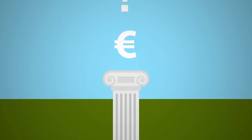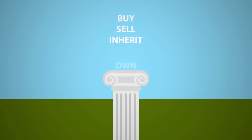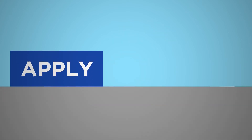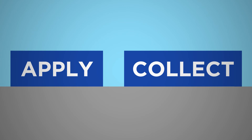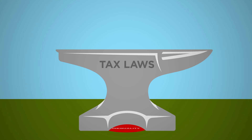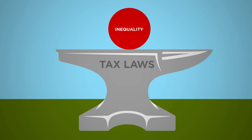So how do governments collect tax? We usually think about tax on income, but if you buy, sell, inherit or own something, or if you're a company and make a profit on something, you likely have a tax to pay. Decisions around how to apply and collect tax give governments an opportunity to use tax laws to either tackle inequality or perpetuate it.